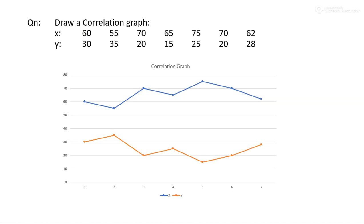Yet another question. Here the variables are x and y. When we plot the values of x and y on a graph paper, we get curves where the blue color denotes variable x and the pink color represents variable y. They are moving in opposite directions at each stage — when x decreases, y increases; when x increases, y decreases. So we may infer that the variables x and y are negatively related. There is a perfect negative correlation between the variables x and y.